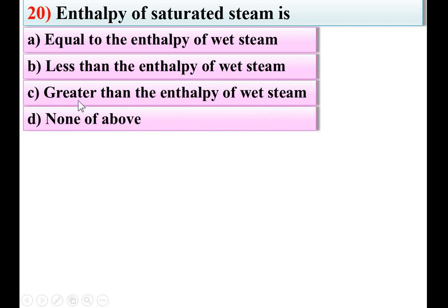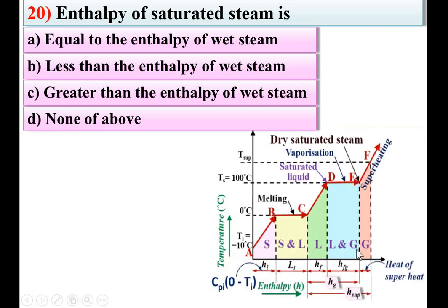Next: enthalpy of saturated steam is option equal to, less than, or greater than enthalpy of wet steam. From the figure, enthalpy of dry saturated steam is Hg. Enthalpy of wet steam, between D and E with reference to the same point C, is Hw. From the figure, Hg is greater than Hw. So enthalpy of saturated steam is greater than enthalpy of wet steam. C is the right answer. Keep watching, thanks my dear friends. Press the like button to appreciate this video.